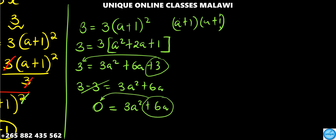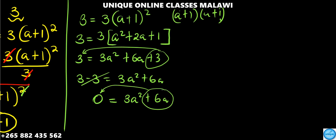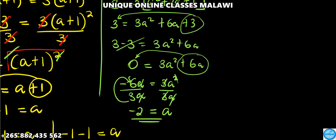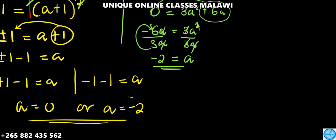To find the value of a, we factor out 3a. So we have negative 6a is equal to 3a squared. Factoring, we get 3a times open bracket a plus 2 close bracket. So a is either 0 or negative 2.